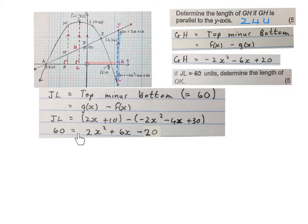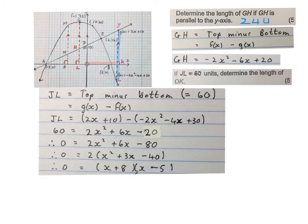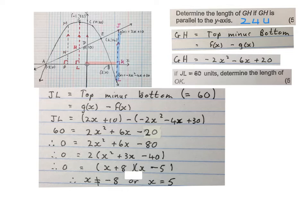But we know that JL is 60, so we go 60 equals this expression. Because it is now a quadratic equation, I minus 60 on both sides. I get 0 = 2x² + 6x - 80. Now we can solve for x. Factorize a common factor out, factorize, and get two values for x: x = -8 or x = 5.